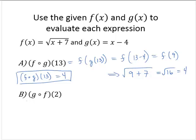Part B: g compose f of 2. Again, the alternate notation would be g of f of 2, which would be g of the square root of 2 plus 7.